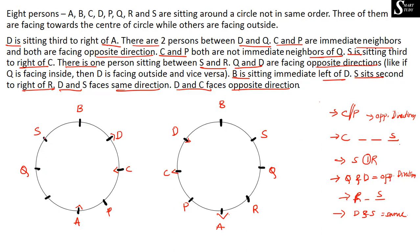So this is also confirmed. C and P are immediate neighbors, and C and P are going to face opposite directions — C is facing outward, so P has to face inward. Q and D are going to face opposite directions: if D is facing center then Q has to face outward; if D is facing outward then Q has to face center. In this case D is facing center, so Q has to face outward. In the other case D is facing outward, so Q has to face center.